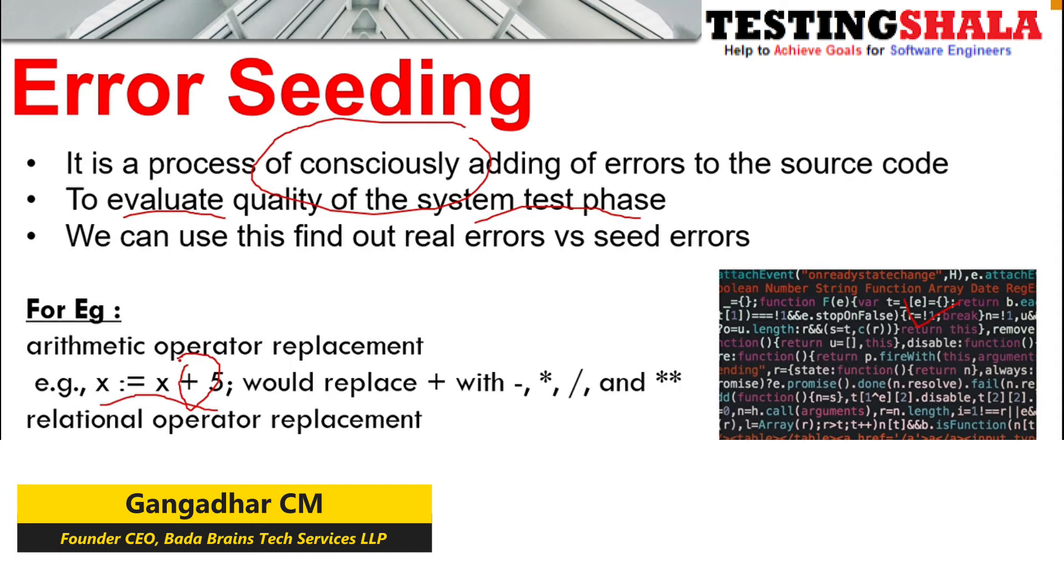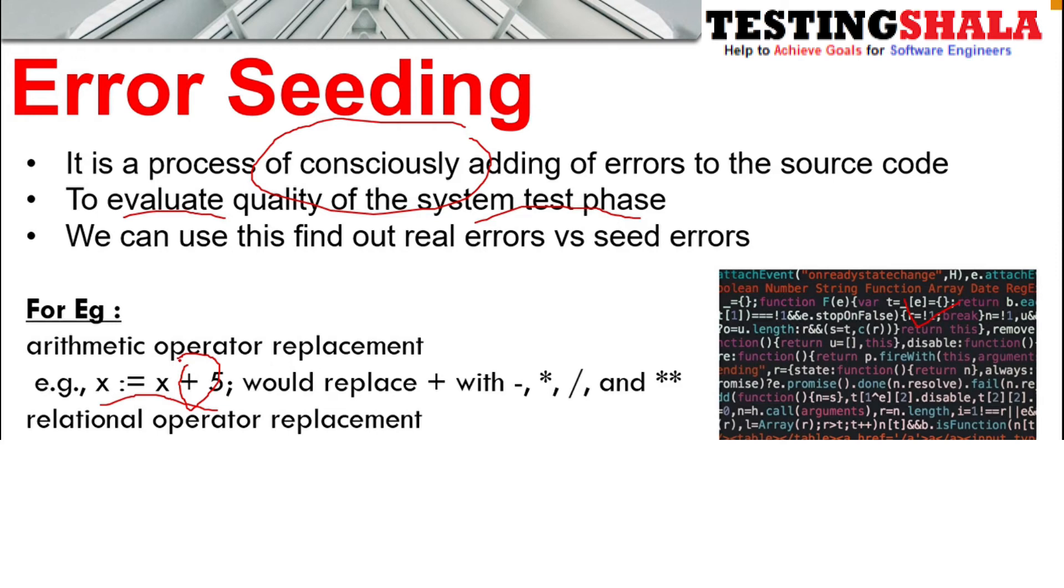Whenever the developer replaces certain operators like this, the tester will try to test in a similar fashion. Definitely, the tester has to log a defect. In case the tester doesn't log a defect, then the error seeding has succeeded, where the tester is not able to identify that the developer has changed it, and the quality of the testing is not up to the mark.